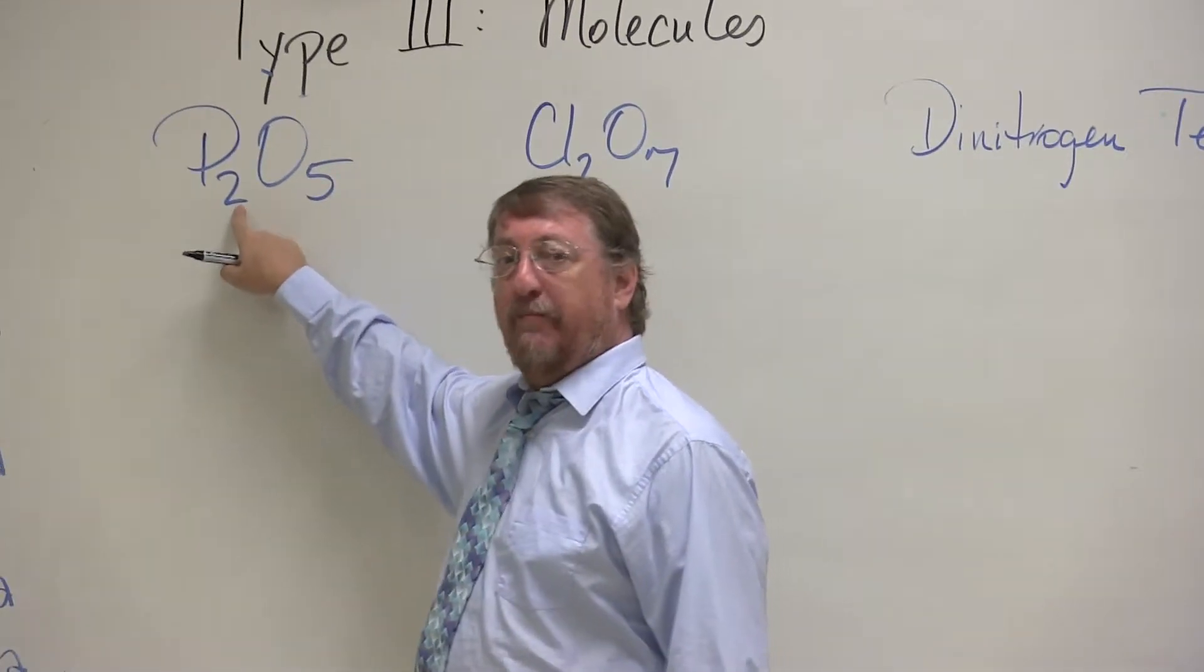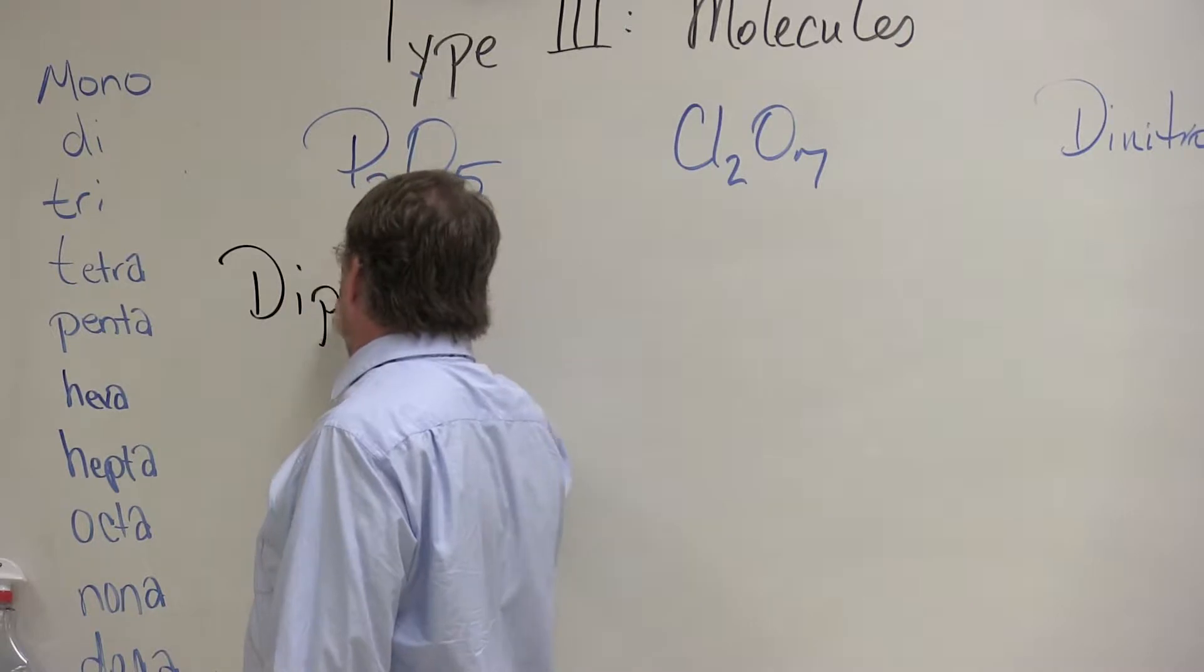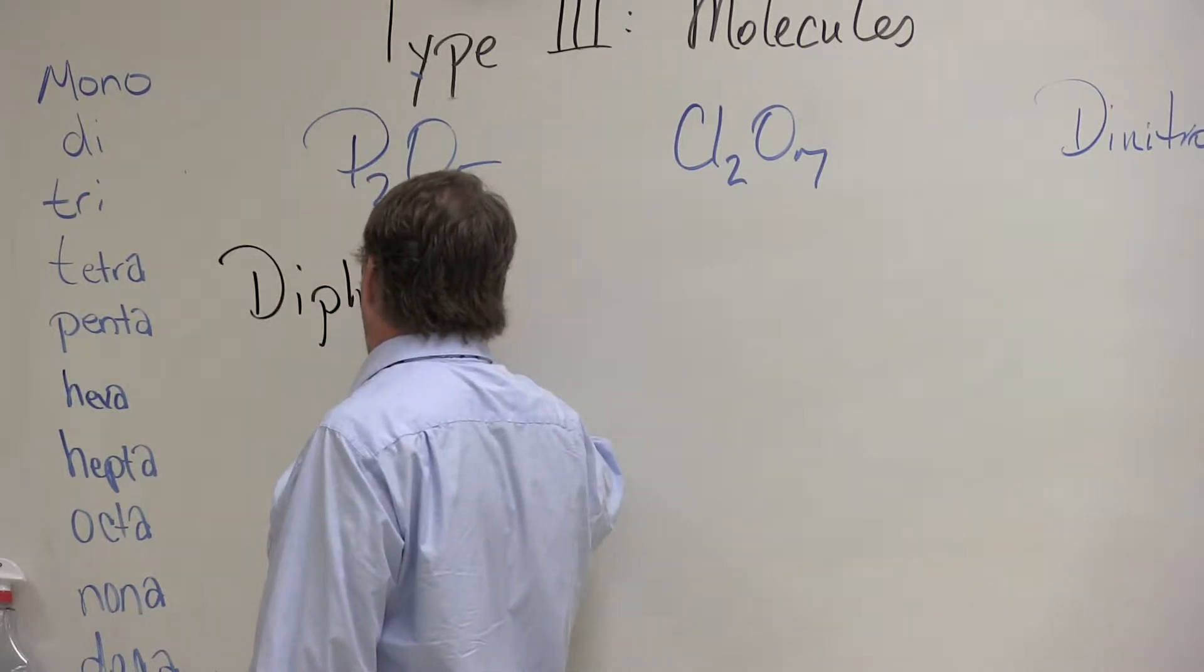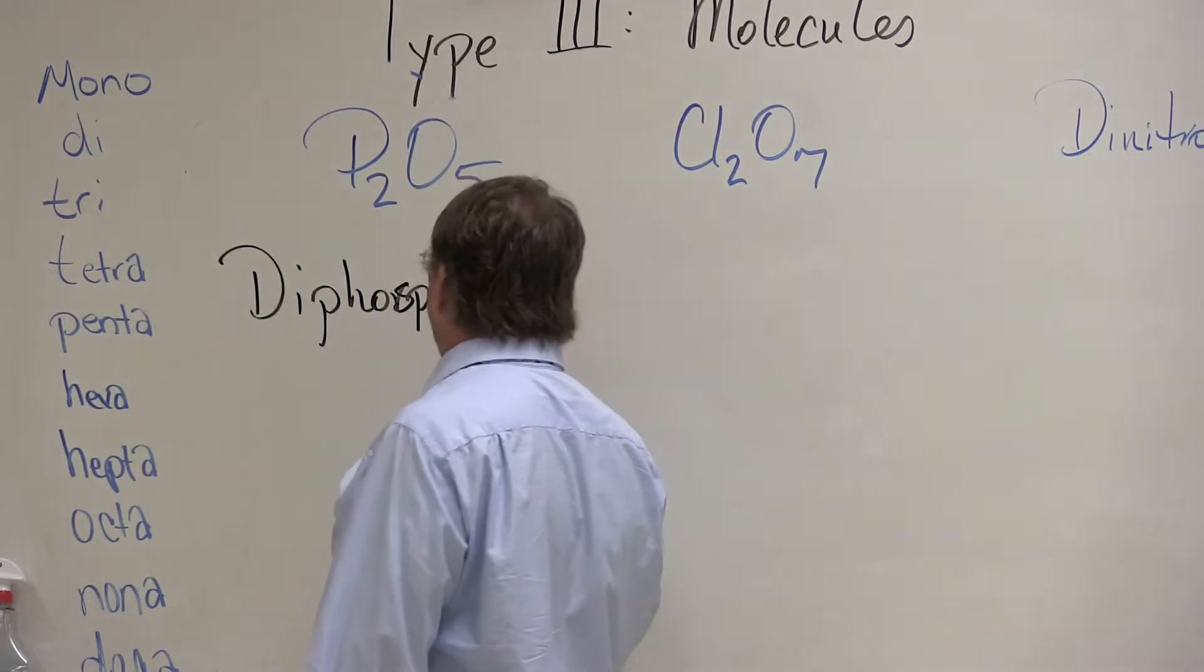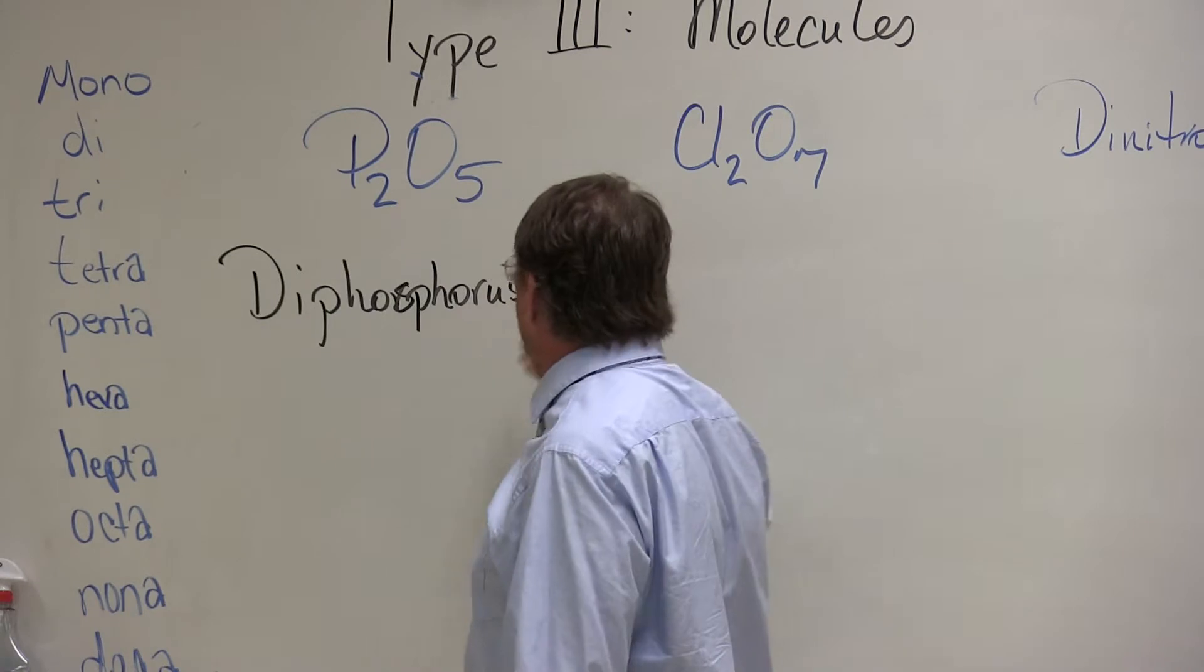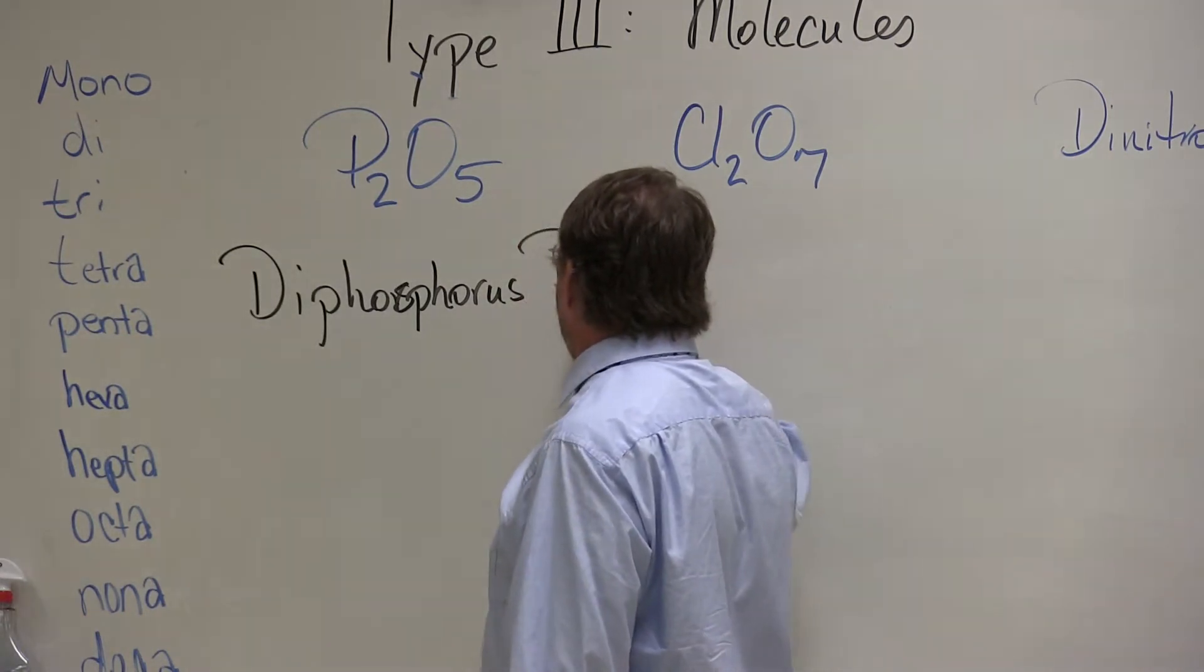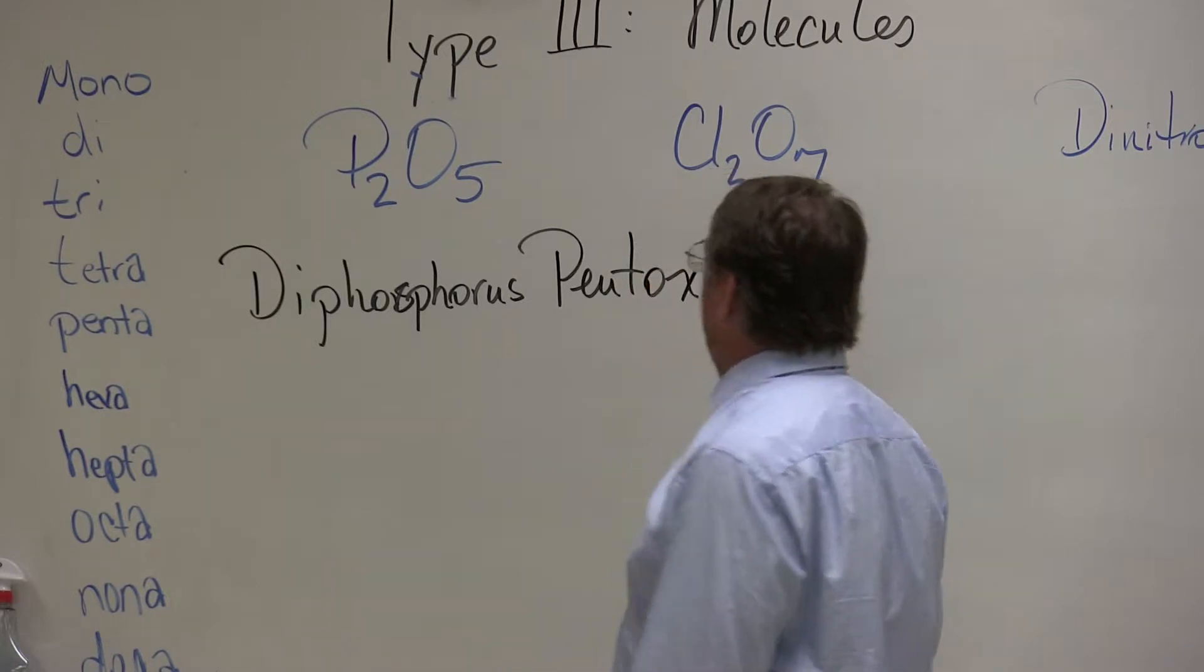We're going to identify the number of atoms. So it's going to be diphosphorus. And then since I have five oxygens, five is penta, we're going to have pentoxide.